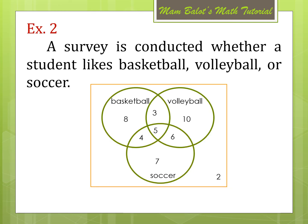Example number 2. A survey is conducted whether a student likes basketball, volleyball, or soccer. From our Venn diagram, we have 8 students in the basketball circle only, then 3, 5, and 4 in the overlapping regions. And we have 2 students outside of the 3 circles, which means these 2 students don't like any of the different sports.